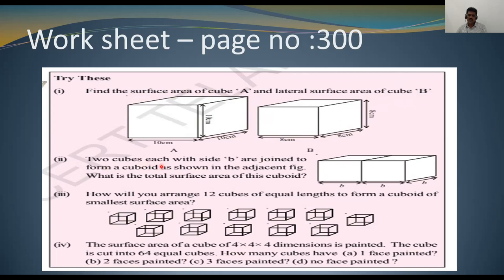Now see the second question: two cubes each with side B are joined to form a cuboid as shown in the adjacent figure. What is the total surface area of the cuboid? As discussed, one cube is joined to the side of another cube — so length is increased. Find out the total surface area accordingly. The third question: how will you arrange 12 cubes of equal lengths to form a cuboid of smallest surface area?